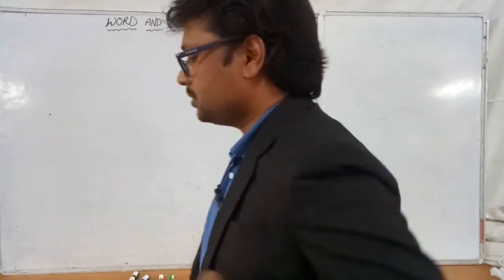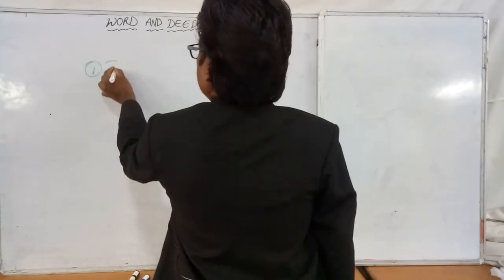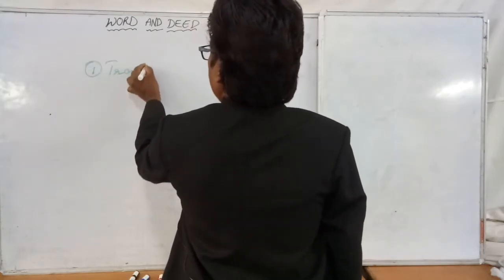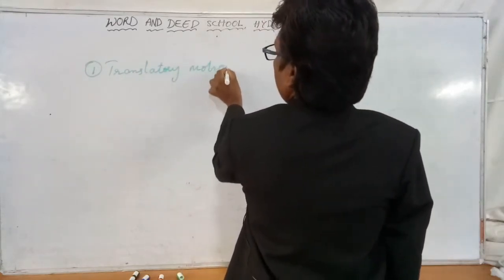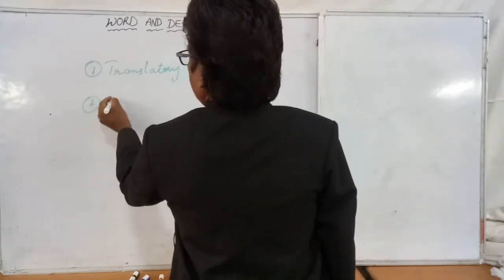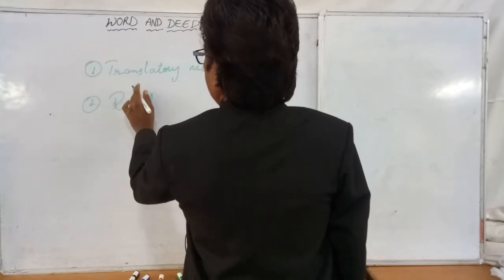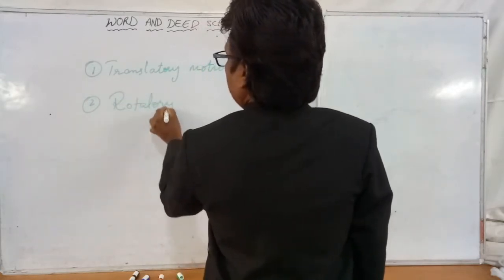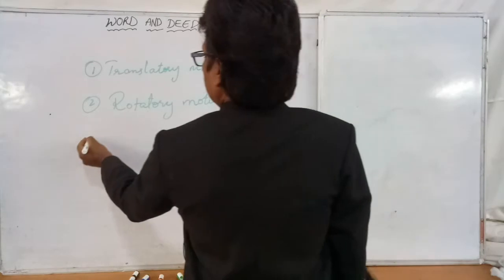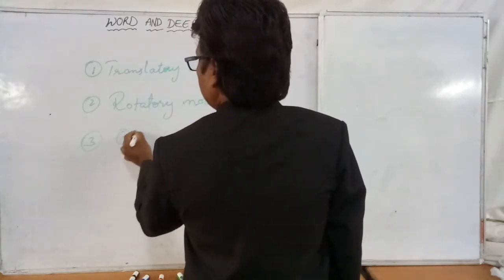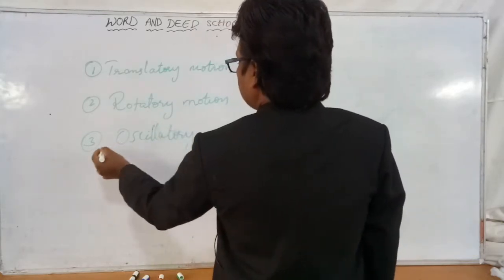In this class, I want to explain the next types of motions. Let me write them first: first, translatory motion; second, rotatory motion; third, oscillatory motion.